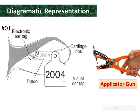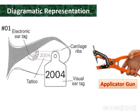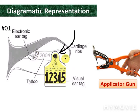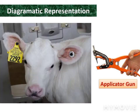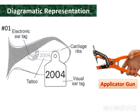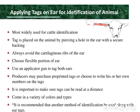A slide applicator gun is used for notching in the ear. The perfect site for an electronic tag is here, tattoo in the middle, and here we can place a visual tag. It is a common livestock farm practice.